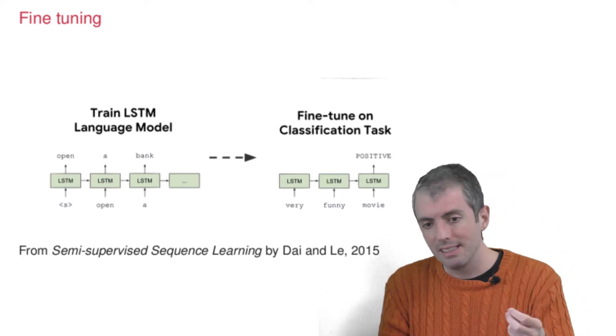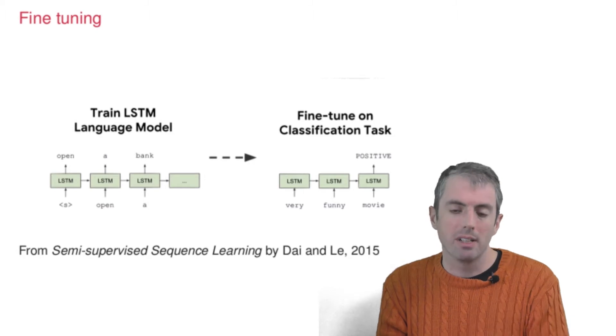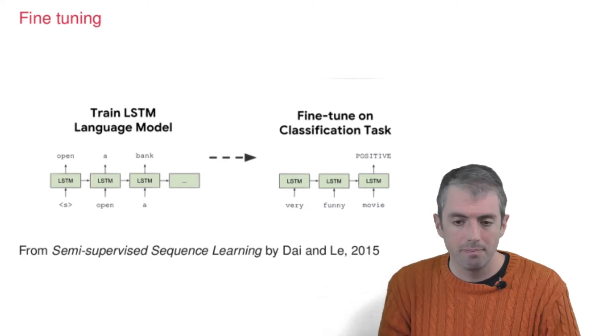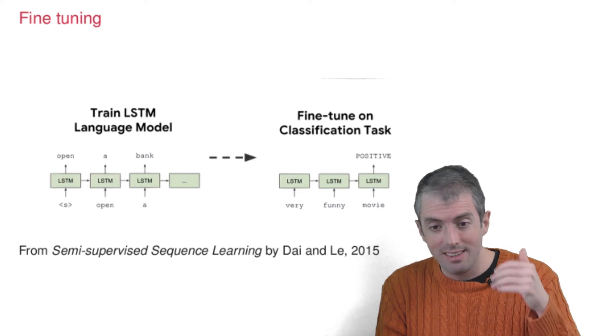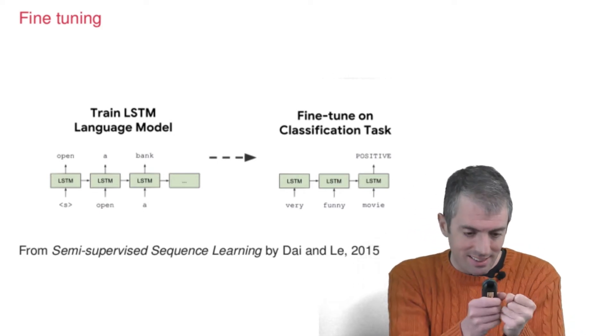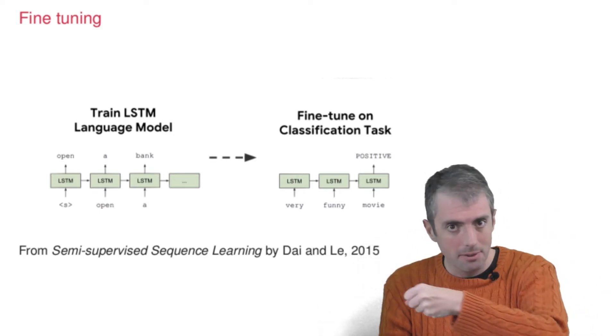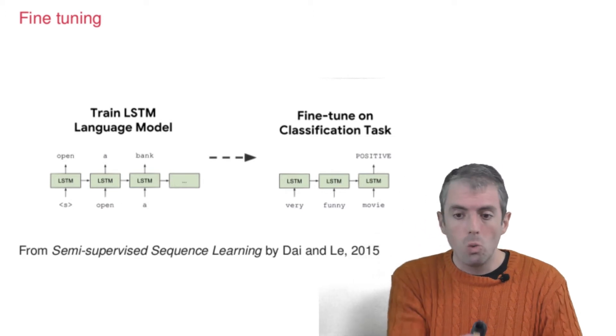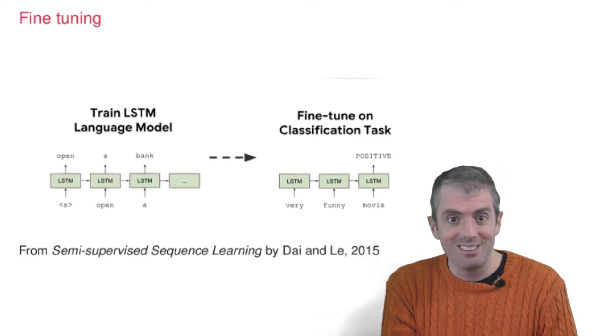Given the sentence, 'open a bank.' And you can take that model that takes an input sentence and computes hidden layer representations to predict words, and then swap out your training objective. Instead of trying to predict the next word, you're now going to try to predict whether a sentence has positive or negative sentiment.